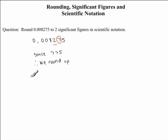So our answer will be, we'll leave all the numbers before this last digit. So we have 0, decimal, 0, 0, 8. And now, because this is greater than 5, we need to add 1 to our last digit. So we will have 3. This is our number rounded to two significant figures.